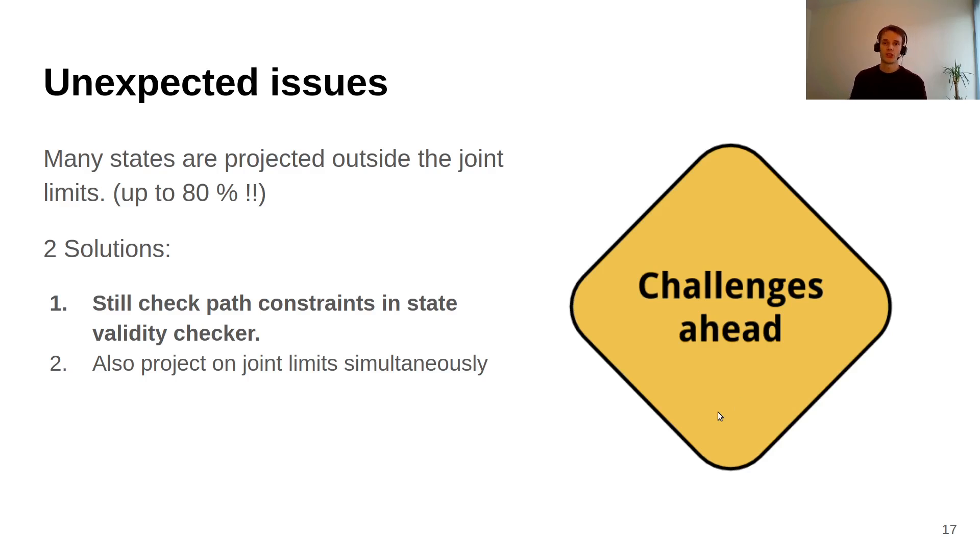So it's kind of projection-based sampling and then an extra layer of rejection sampling. Or the second solution is you can also add the joint limits to your model of the constraints, so you can project onto the Cartesian constraints and the joint limits simultaneously. This also works, but I just picked one of the two that seemed to work the fastest at the time.